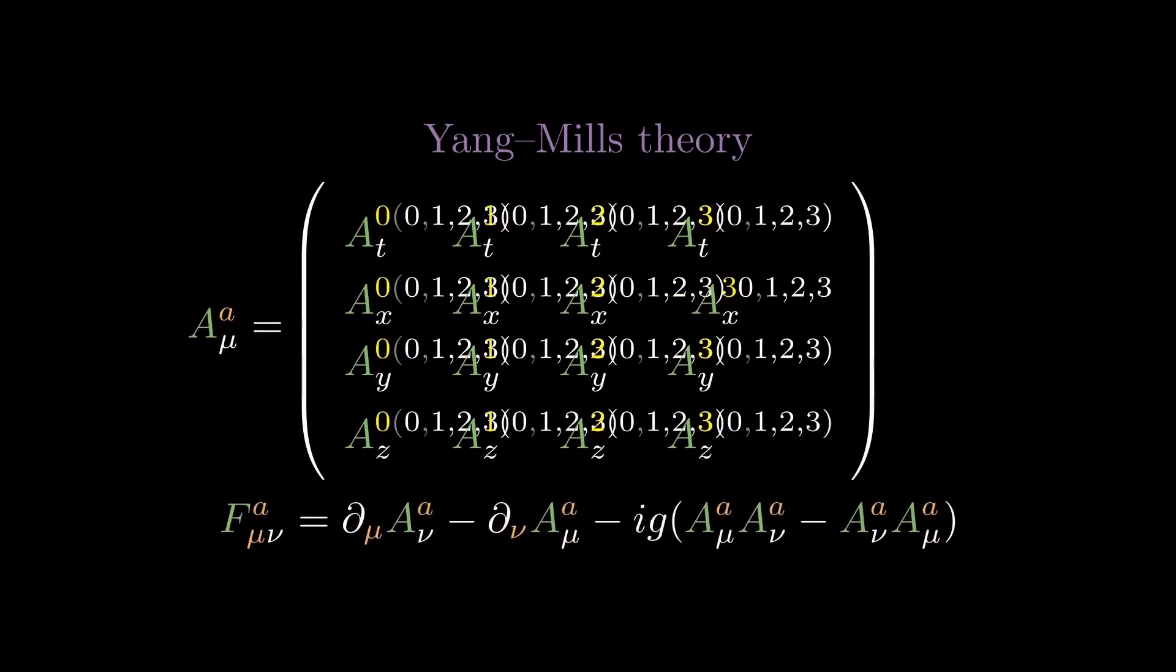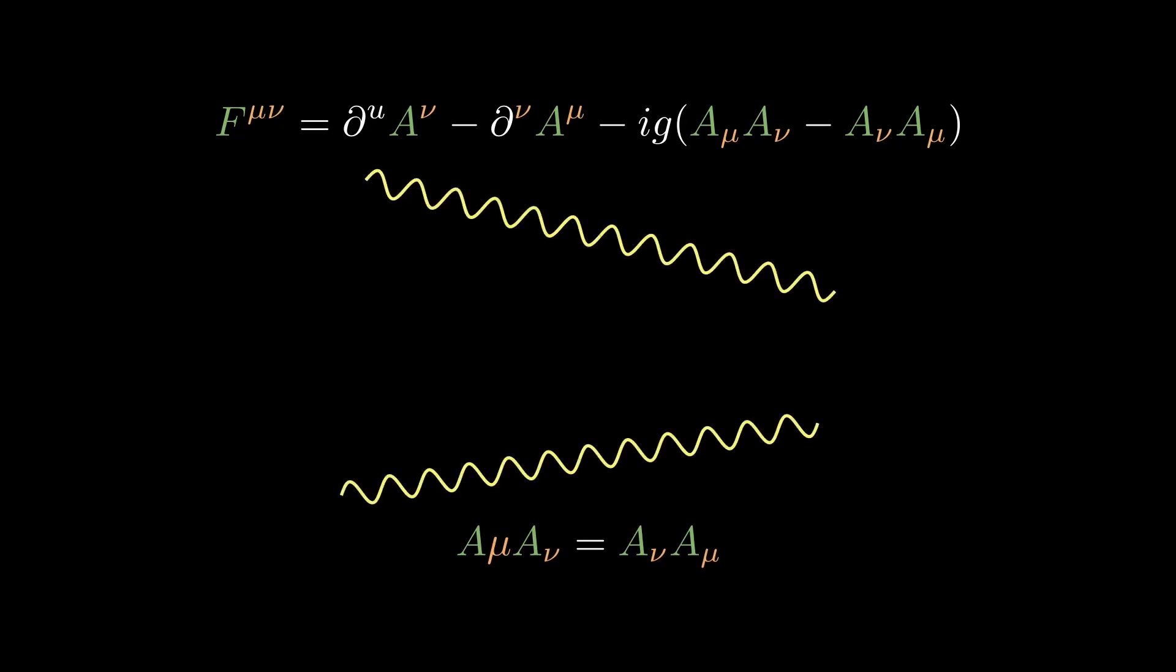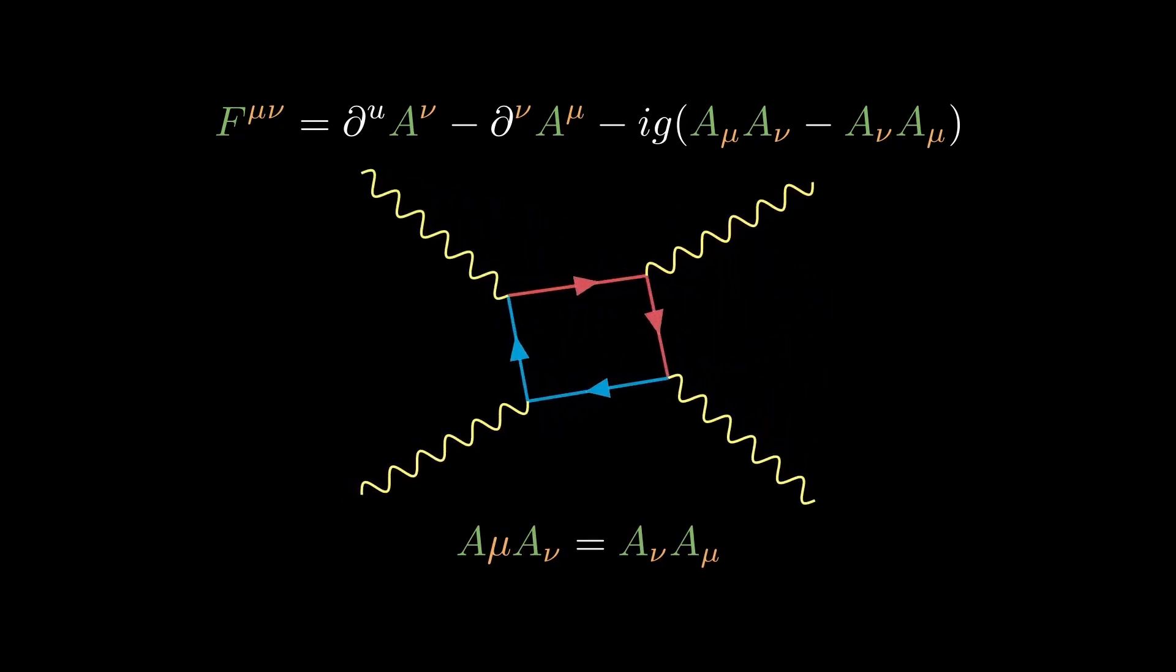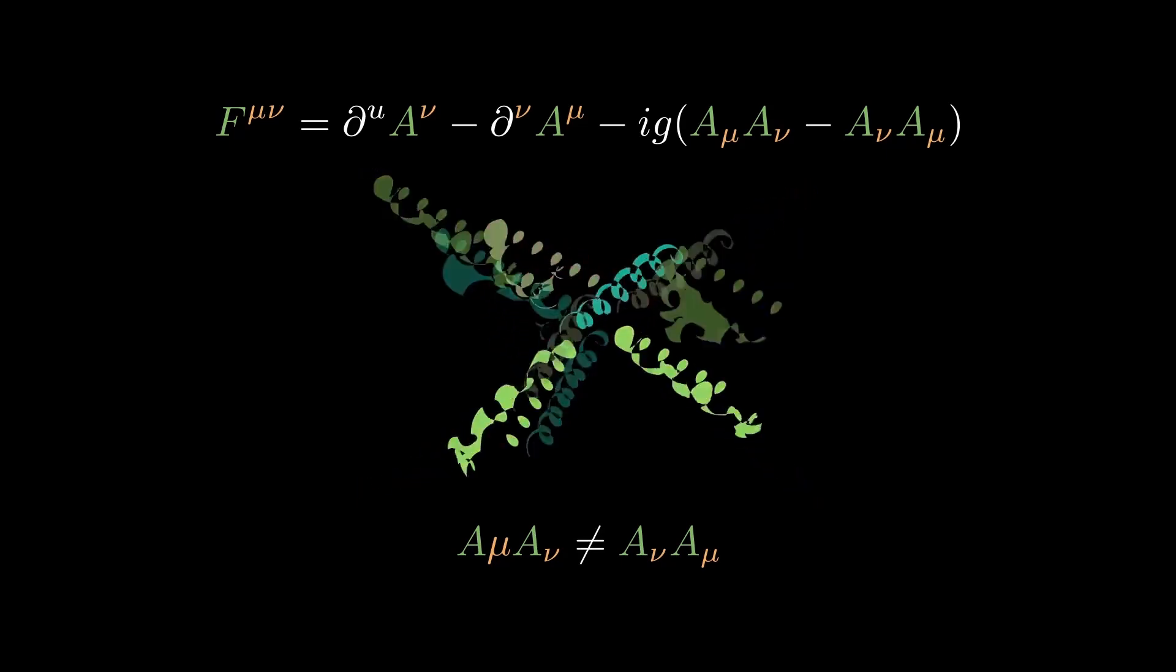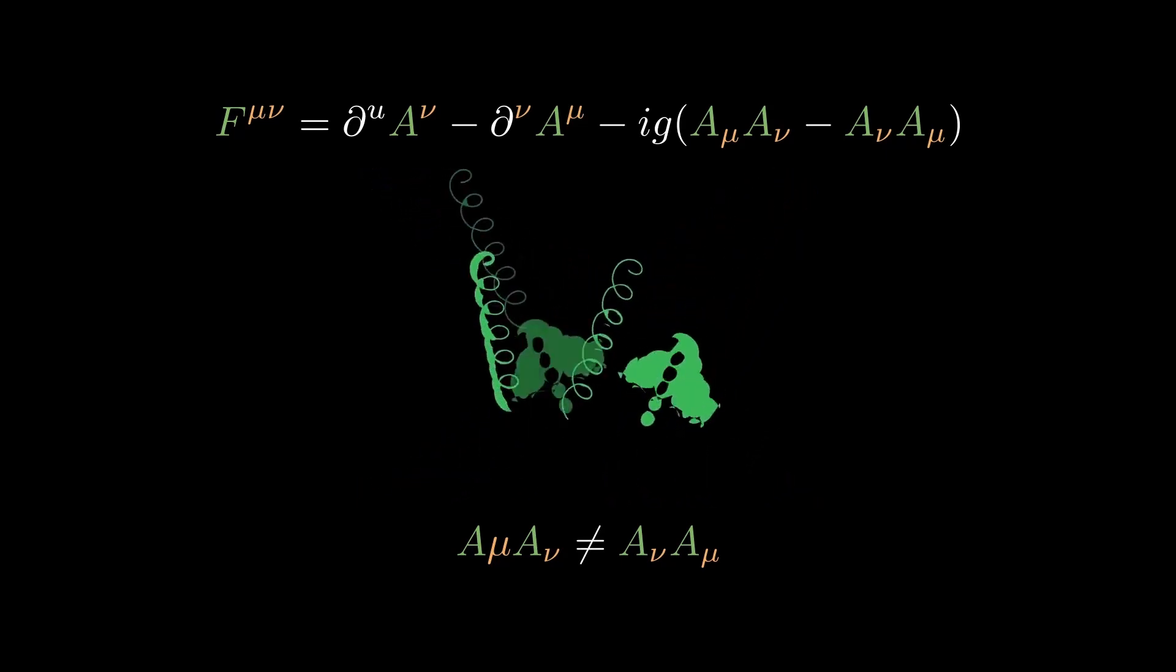Second, it introduces a commutator term to the definition of the field tensor, which vanishes if the components of the potential field commute. One of the more immediate implications of this generalization is the self-interactions of the gluons, in contrast to the non-interaction of photons. Because each component of the strong potential field is now essentially a matrix, Yang-Mills theory is able to explain why, while the photons can only scatter off of each other with the help of other particles, gluons can scatter with themselves because their matrices do not commute.